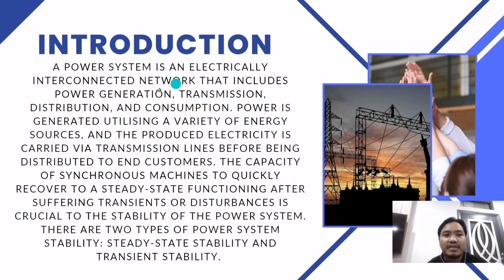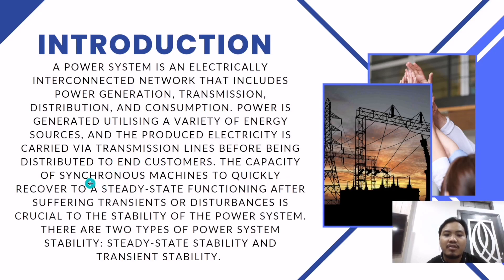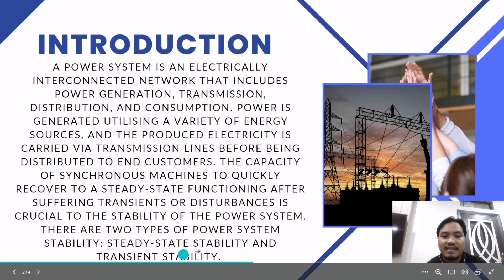A power system is an electrically interconnected network that includes power generation, transmission, distribution, and consumption. Power is generated utilizing a variety of energy sources and the produced electricity is carried via transmission lines before being distributed to customers. The capacity of synchronous machines to quickly recover to a steady state function after suffering a disturbance is crucial to the stability of the power system. There are two types of power system stability: first, steady state stability, and second, transient stability.